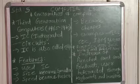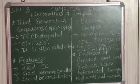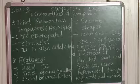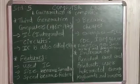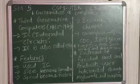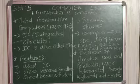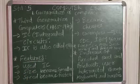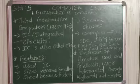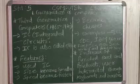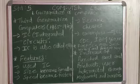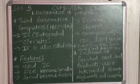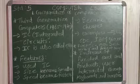A huge number of transistors could be accommodated into a small chip of IC. Bahut saare transistor ko is IC mein sthan diya gaya hai jo ek bahut hi small chip hai. Computers became more compact, cost came down and became more efficient.